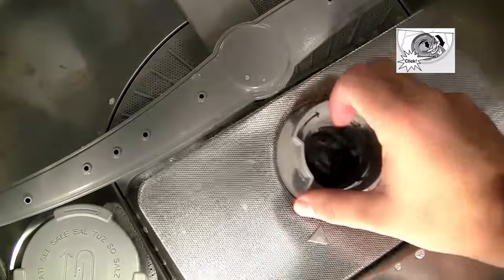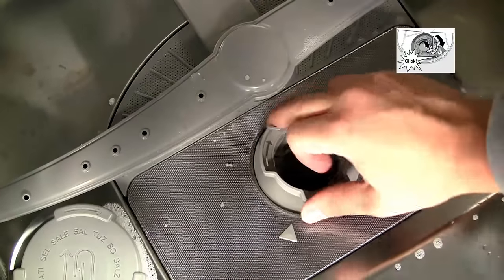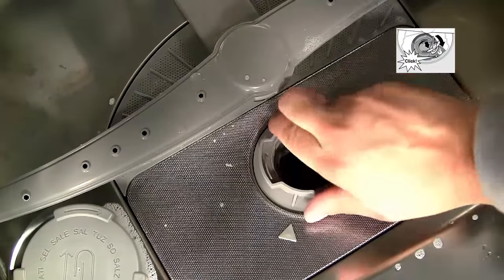Replace the filter unit and twist clockwise to ensure the marker and the arrow line up and the cover is properly engaged. You can then plug in, turn on and use the appliance. Test it using the pre-wash program.